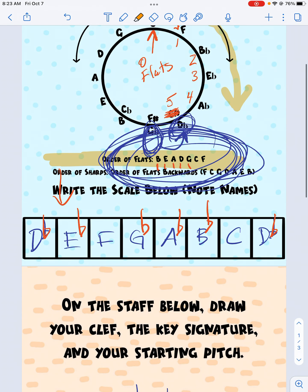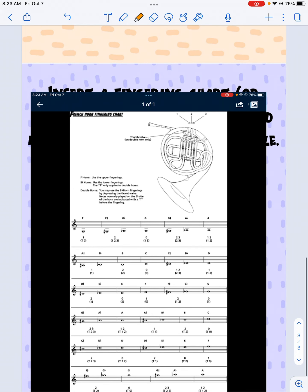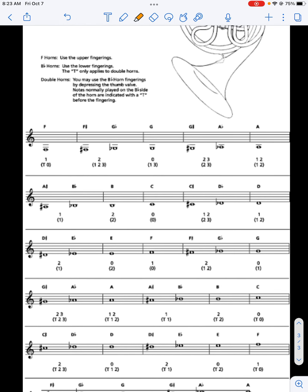And then I grab my highlighter. Now the letter names were up here on this page. So I'm using these letter names with this starting pitch to find the notes on this scale or on this fingering chart. So I find that first note it was D flat. There it is. Next note was E flat.